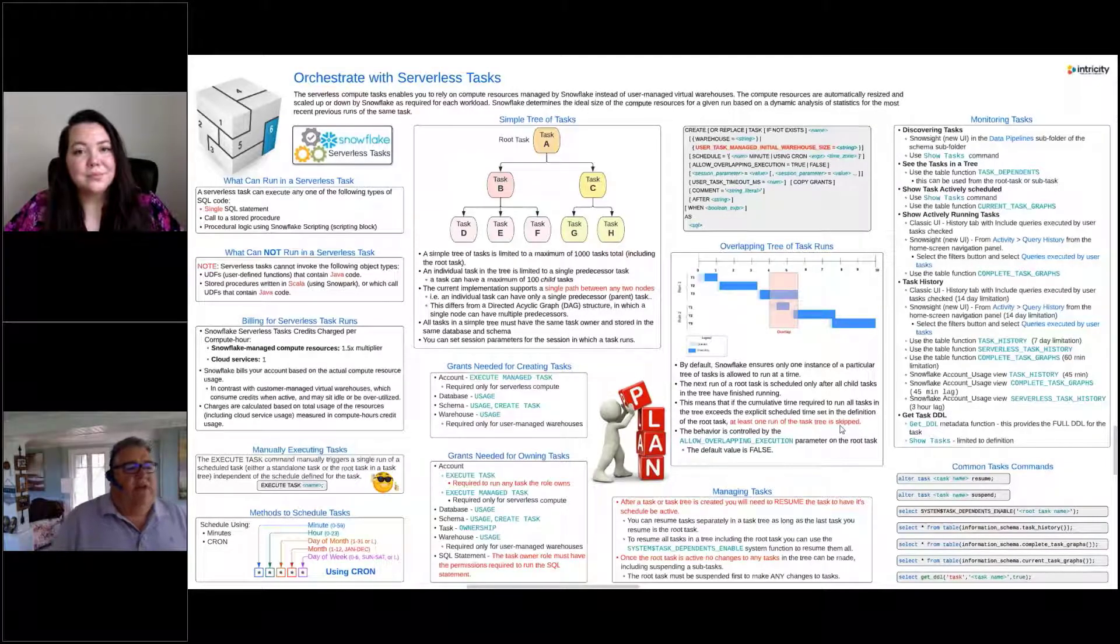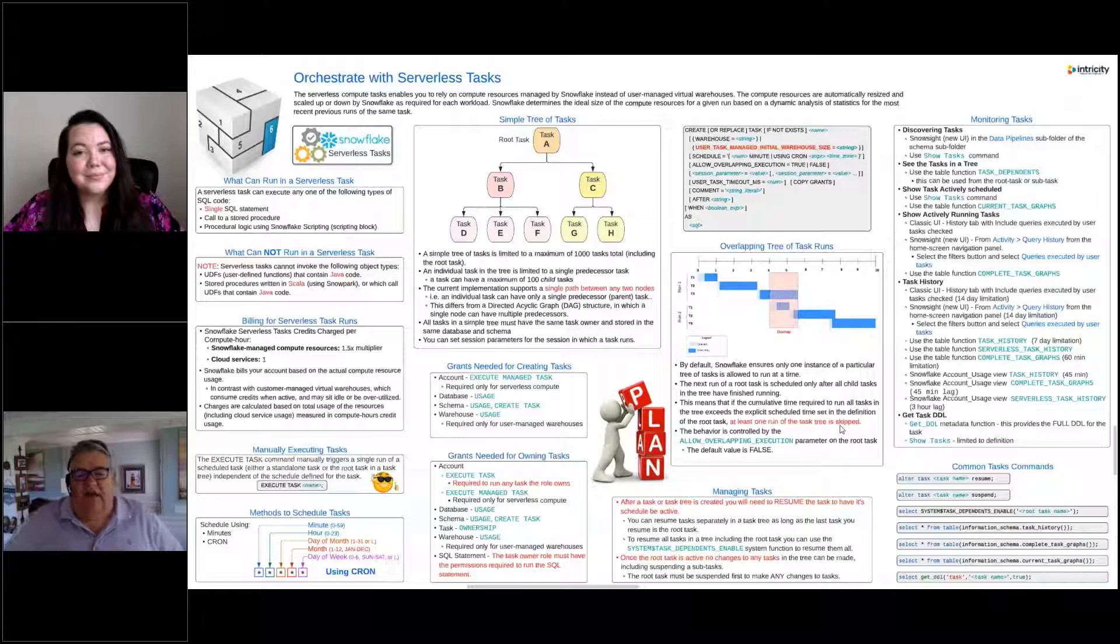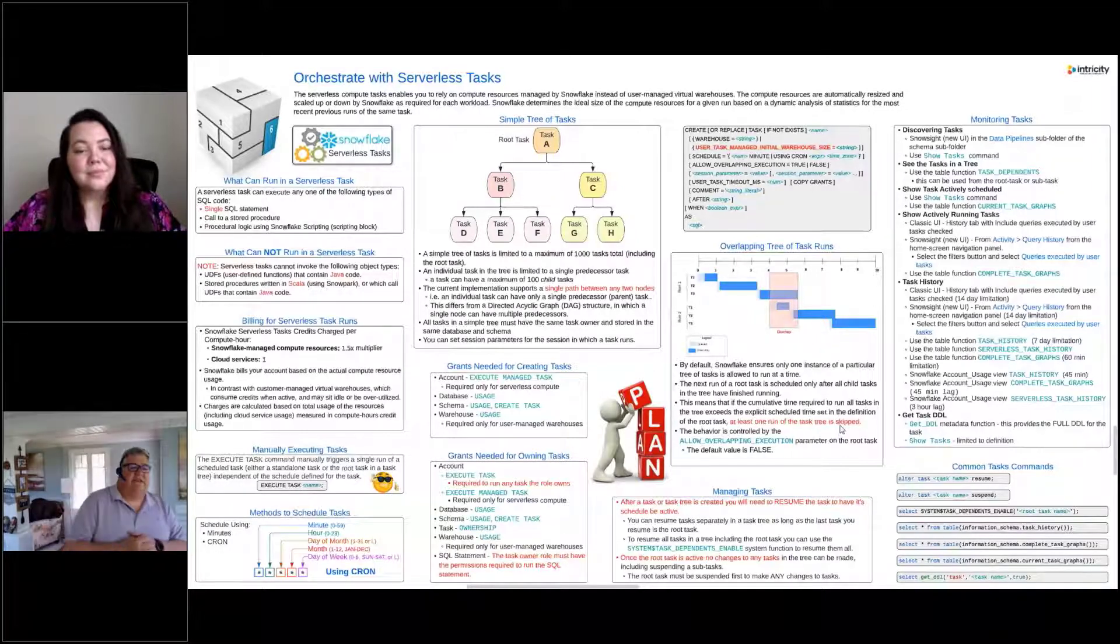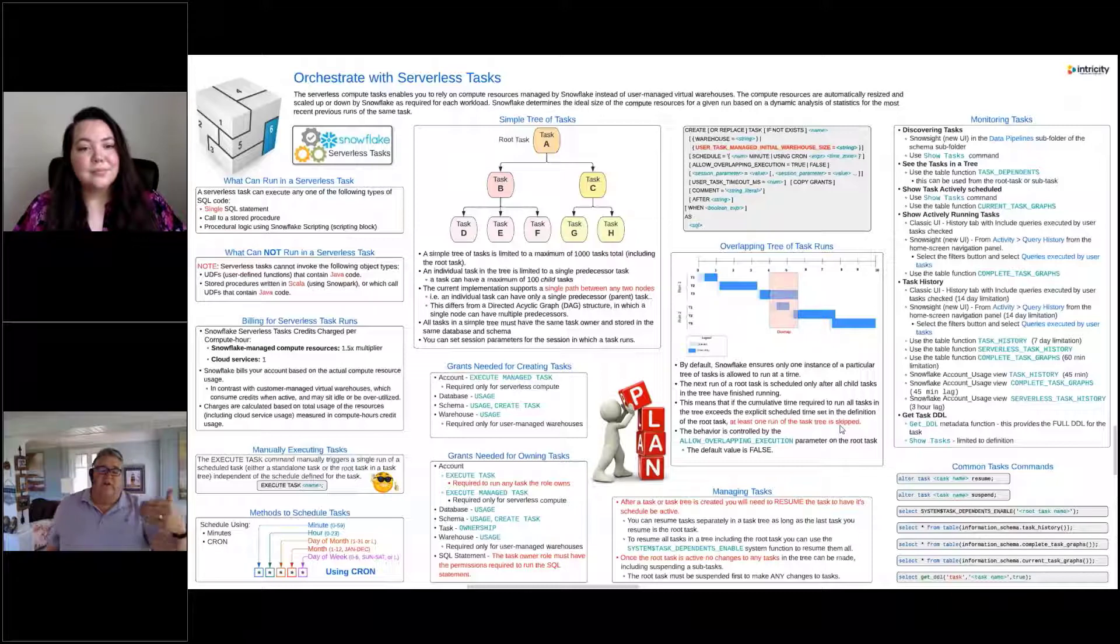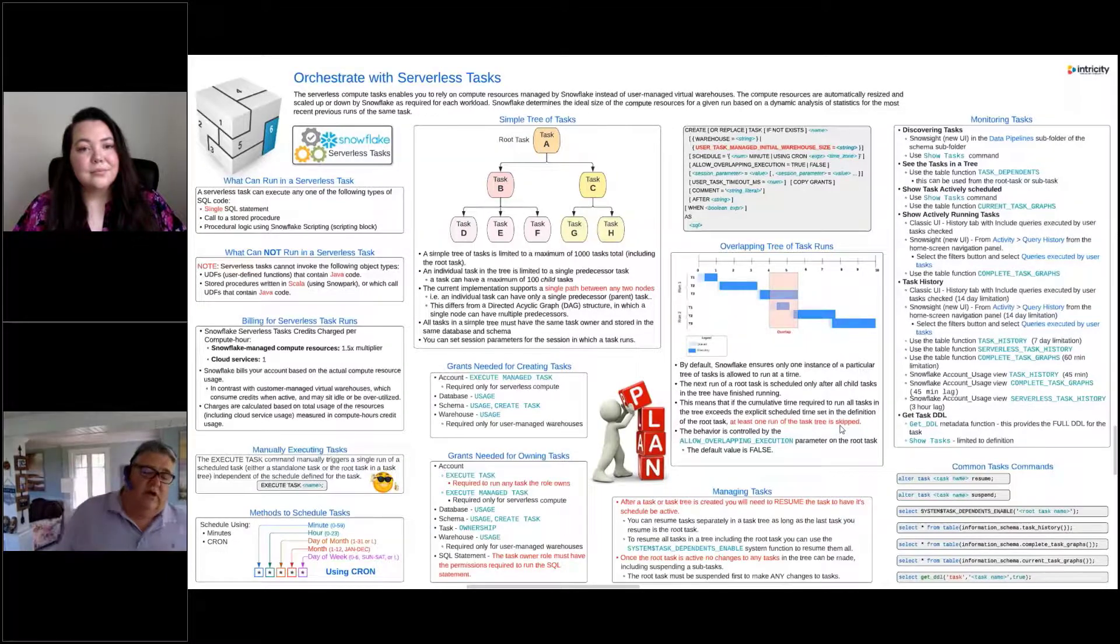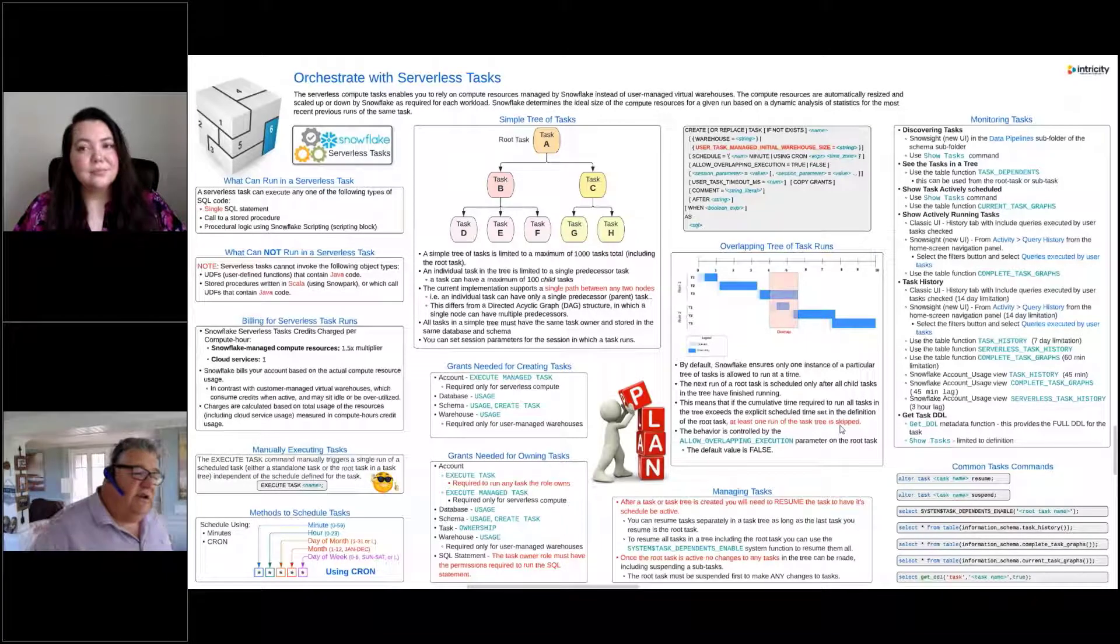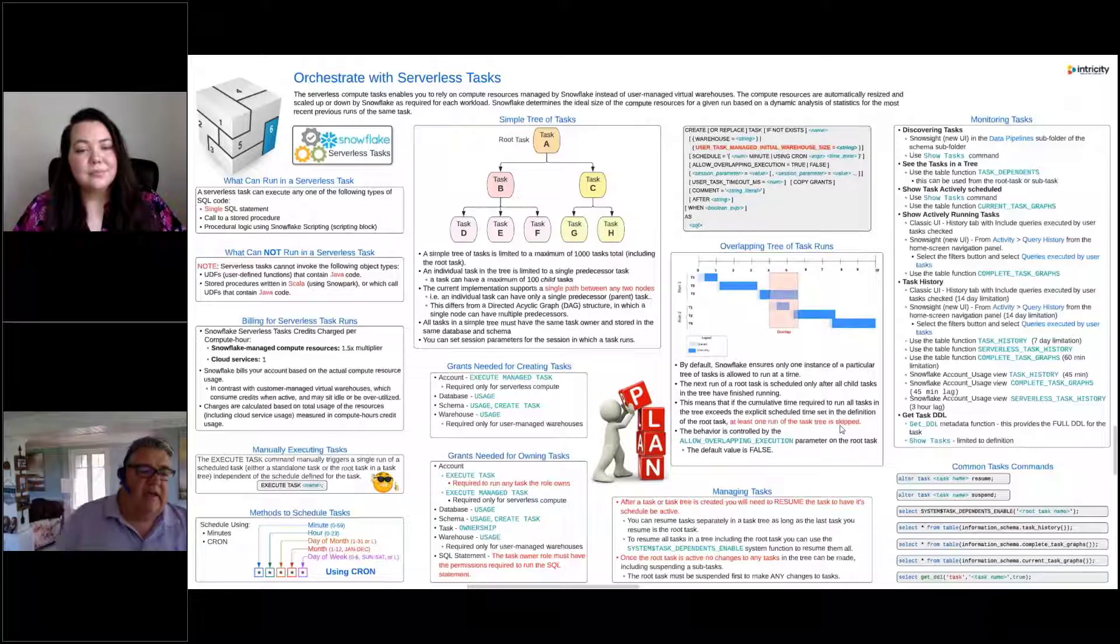When we create a serverless task, what that allows us to do is rely on compute resources managed by Snowflake instead of us managing which warehouse the task is going to use. So basically we can have a task that's running and we're telling Snowflake, you go ahead and using the history of this task running, you decide what size warehouse this task should use and then that can change.